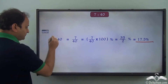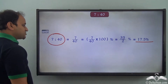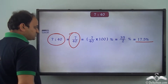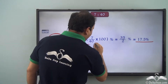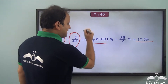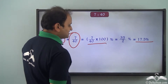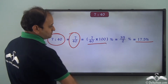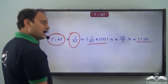So what did we do? We converted this ratio into a fraction and then we converted this fraction into percentage by multiplying with 100 and then placing a percent symbol beside it, and we got the answer.